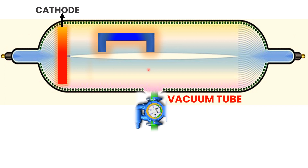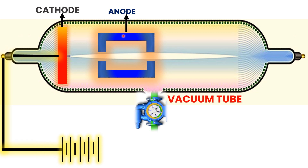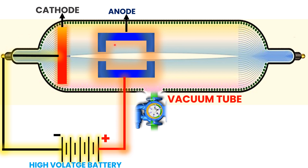There is another metal plate inside the cathode ray tube known as the anode. The metal plate connected with the negative terminal of the battery or high potential source is known as the cathode, whereas the metallic plate connected with the positive terminal is known as the anode. The role of the cathode is to push electrons away from it — it liberates electrons from itself — whereas the role of the anode is to pull electrons toward itself.